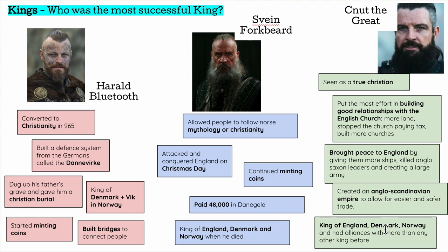The third king — arguably the best of the three — is Sven Forkbeard's son, Canute the Great. He was seen as the true Christian king. His grandfather Harold had started the journey of Christianity, but Canute put real effort into building relationships with the English church — giving them more land, stopping the church paying tax, and building more churches. He brought peace to England after years of Viking raids, and created an Anglo-Scandinavian empire bringing the English and Vikings together. By his death, he was king of England for the longest, as well as Denmark and Norway, with alliances across Europe — making him the most successful of the kings.